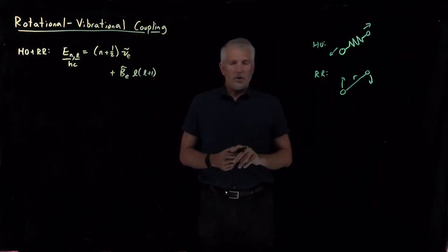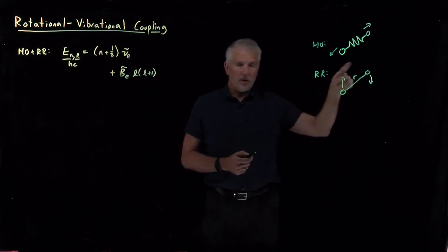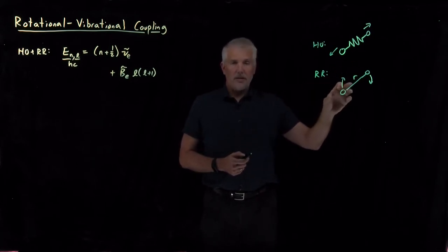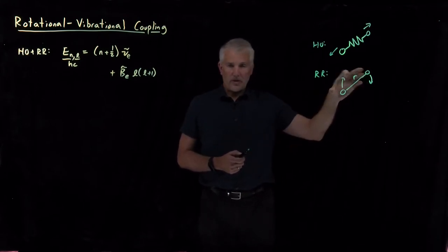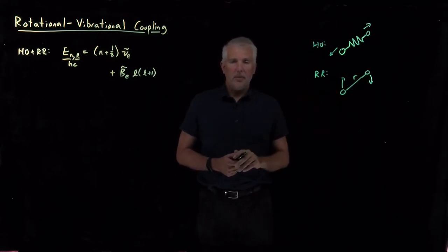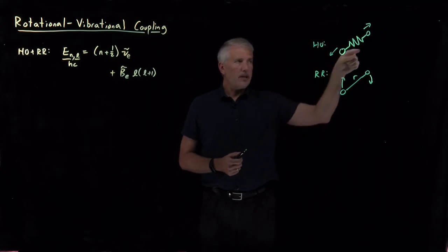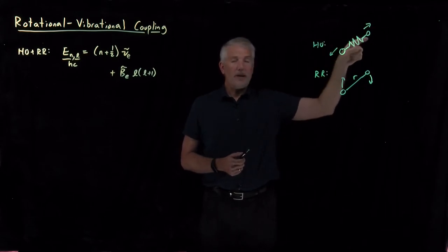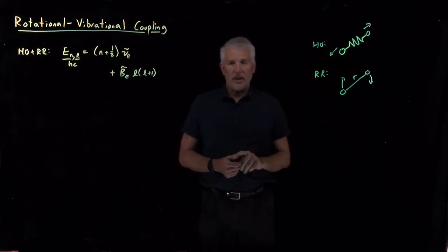In the centrifugal distortion correction, we talked about the fact that making the molecule rotate with higher rotational energy will cause the bond to stretch a little bit. But there's another contradiction: making the molecule vibrate — increasing its vibrational energy — will also change its average bond length.